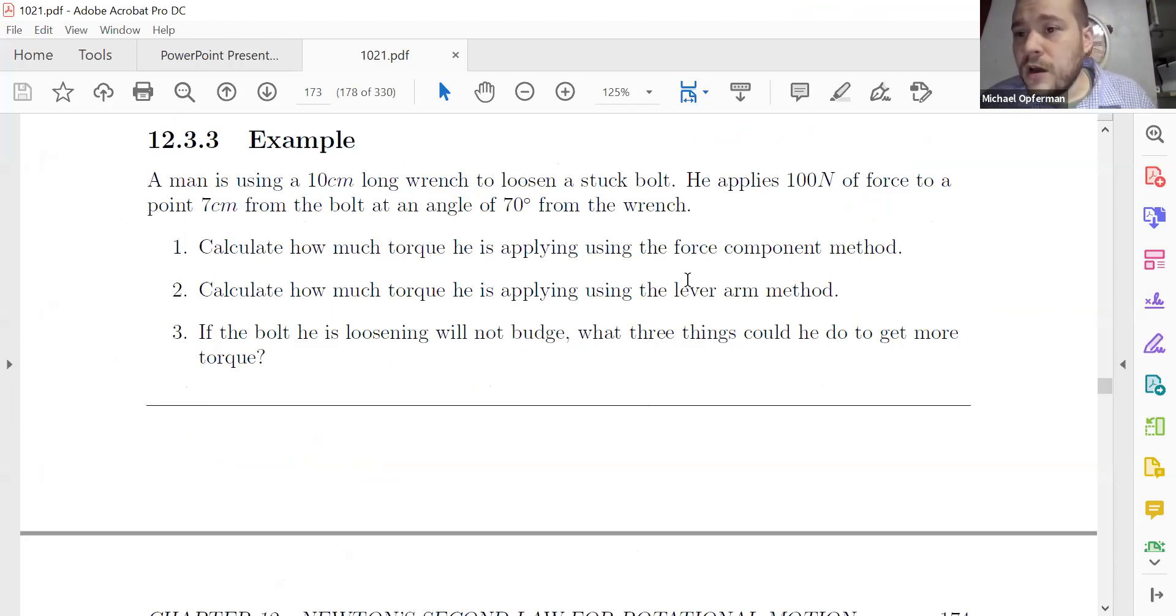You're trying to loosen a bolt using a wrench, and this is a 10-centimeter long wrench, and you apply a 100-Newton force seven centimeters away from the bolt, 70 degrees from the direction of the wrench, and you want to calculate how much torque are you applying with this force. So first we're going to calculate it using the force component method, then we'll calculate it using the lever arm method, and you'll be able to see the two different methods and how they give you the same answer.